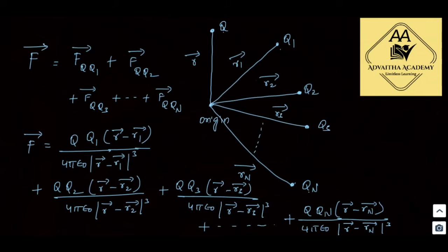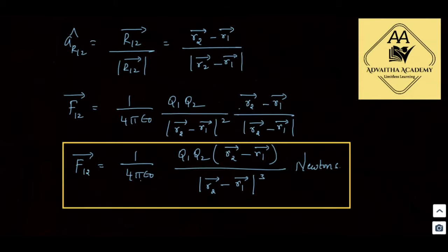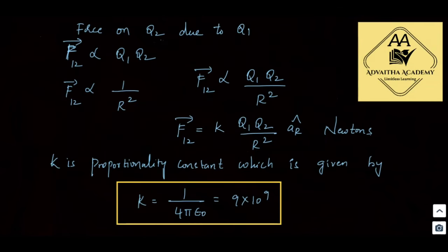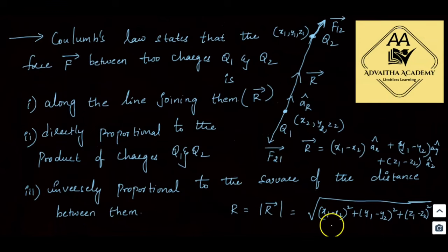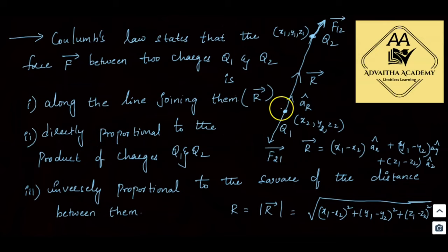To summarize Coulomb's law: it is used to find the force between two charges. The force is in the direction of the line joining the two charges (along r-bar). It is directly proportional to the product of the charges, and inversely proportional to the square of the distance between them.